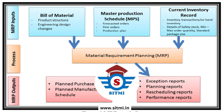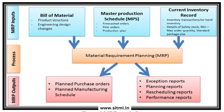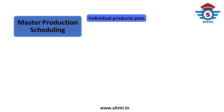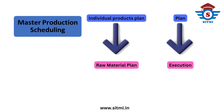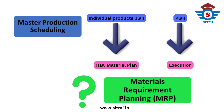Now we will talk about MRP or materials requirement planning. We fairly know that MPS plans for individual products' production plan, but that is just a plan — there is no execution so far. So to do that execution, we need a systematic, scientific way to plan for required raw material, and that answers a requirement of materials requirement planning in the planning systems.